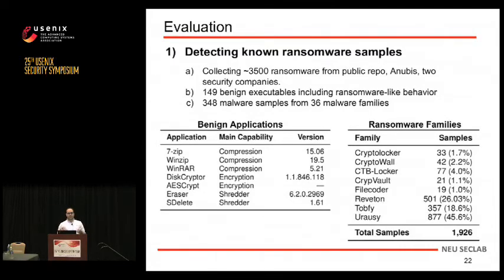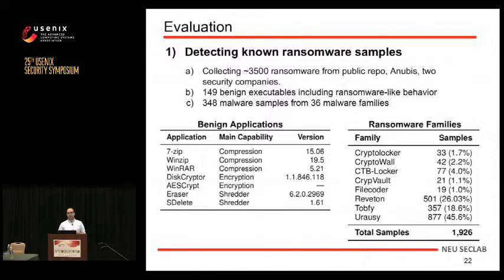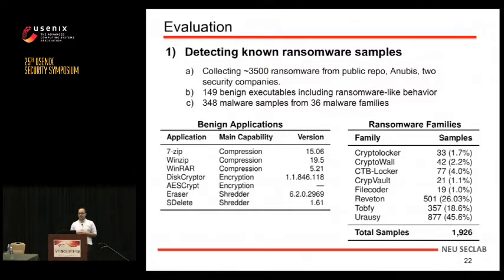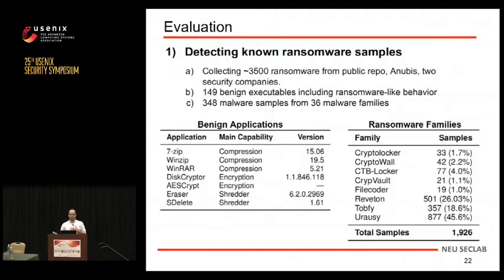We tested the system with labeled ground truth data consisting of 3,500 malware samples collected from public repositories and security companies. From those samples, 1,900 were active during analysis. We also used benign applications including ransomware-like programs — for example, an AES script and SDelete — to ensure our dataset contained both benign and malicious samples.